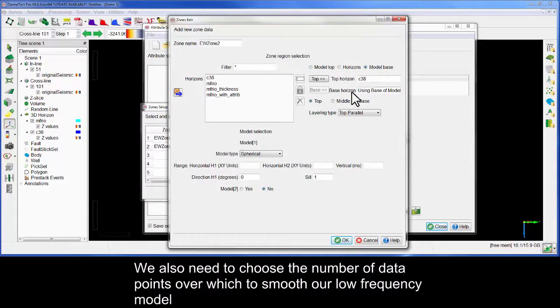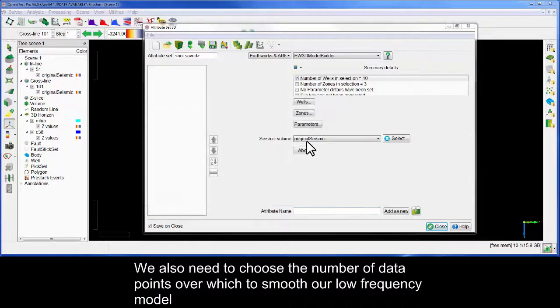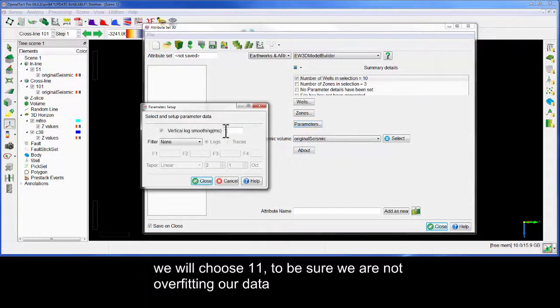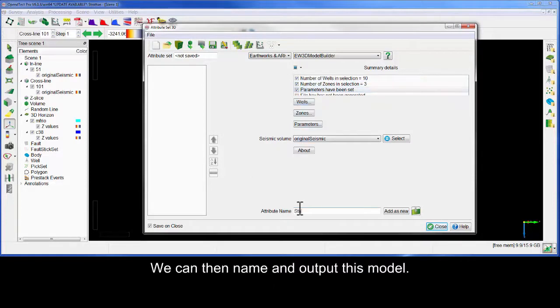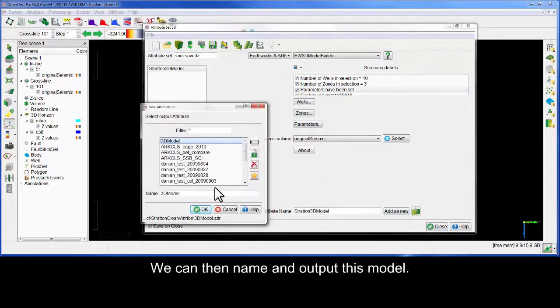We also need to choose the number of data points over which to smooth our low-frequency model. We'll choose 11 to be sure that we're not overfitting our data. We can then name and output this model.